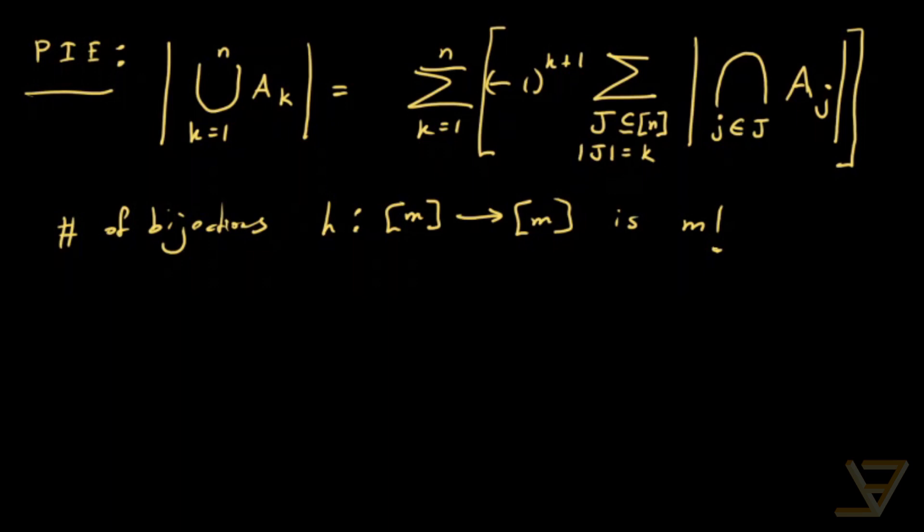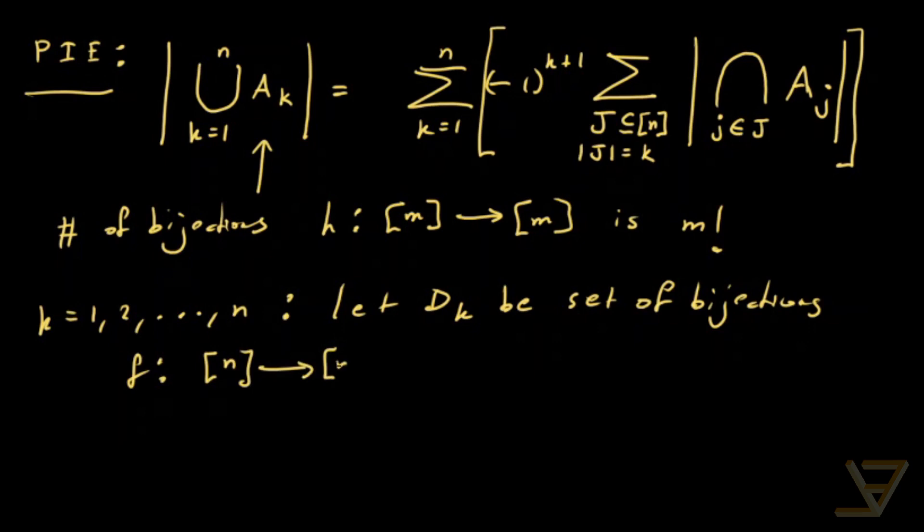So here's what we're going to do. For the a_k's, we're going to define for k equals 1, 2, all the way through to n. And then let D_k be the set of bijections f from n to n such that k is a fixed point.